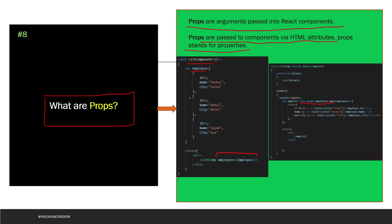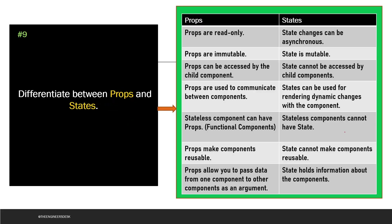Here's an example: a List component declares an array called Employee containing three employee objects, each with ID, name, and city fields. This Employee array is passed to the List component as a prop. Inside the List component, writing props.employees gives access to all three elements. The map function is used to destructure the array and print each employee's ID, name, and city.